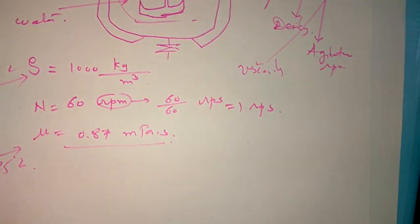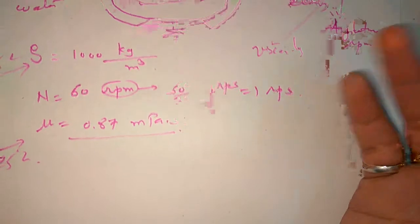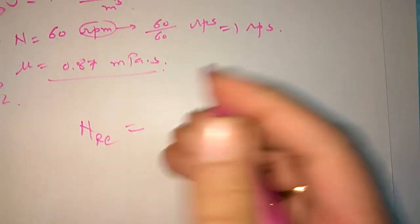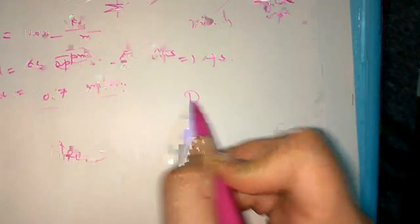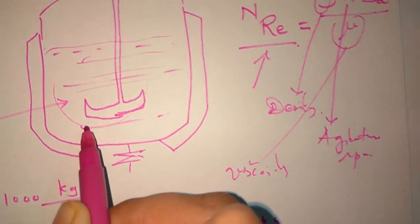This is the density of water at 25 degrees centigrade. We are taking here example at normal temperature, the ambient temperature. So now Reynolds number is equal to... one more thing I just forgot.